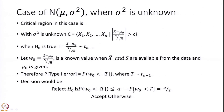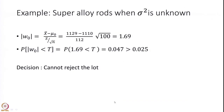Equivalently, we can say that the probability that the random variable T is greater than W₀ should be less than or equal to alpha by 2; otherwise we accept the hypothesis. In the super alloy rods example, using a sample standard deviation of 112 MPa, W₀ turns out to be 1.69. The probability that a T random variable with n minus 1 degrees of freedom is larger than 1.69 is 0.047, which is greater than 0.025. Therefore we cannot reject the lot — we do not have sufficient evidence.